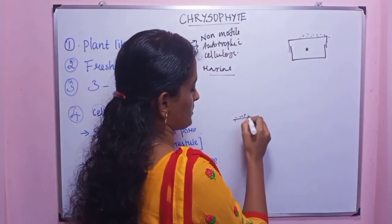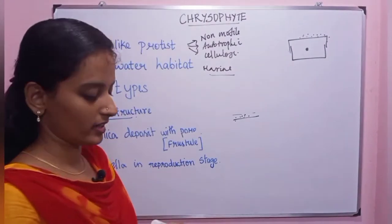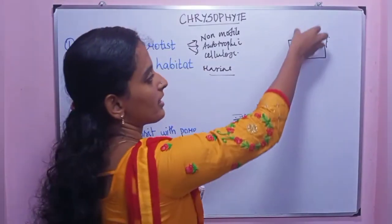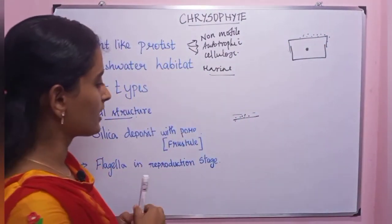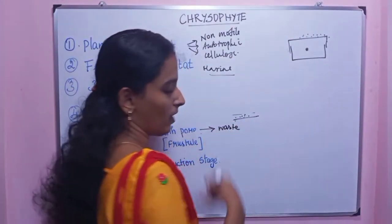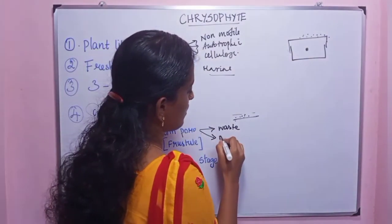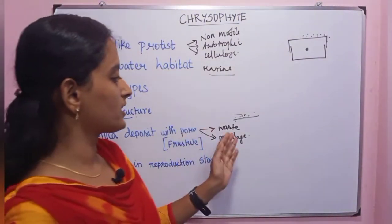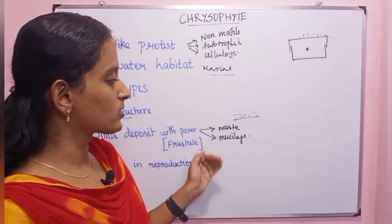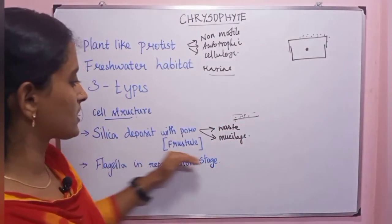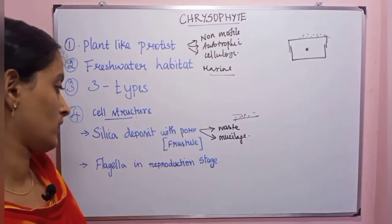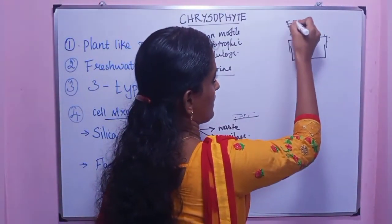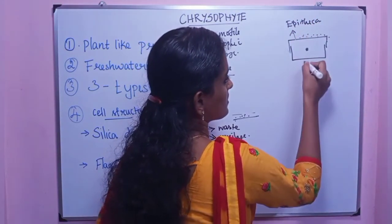The cell wall is made up of silica deposition and mucilage. The silica deposit has pores, through which waste particles are removed from the body via mucilage secretion. This type of cell structure is like a frost tube with two layers: epitheca and hypotheca.